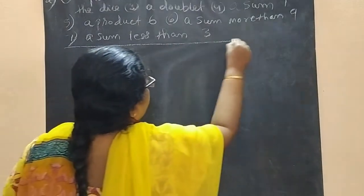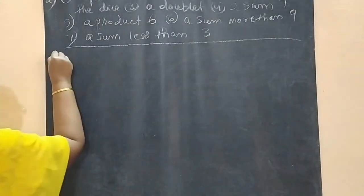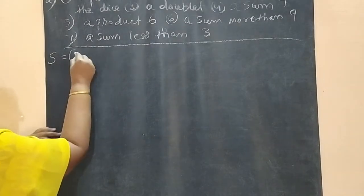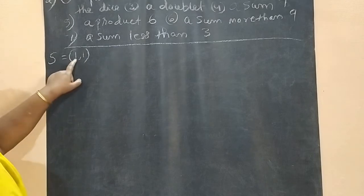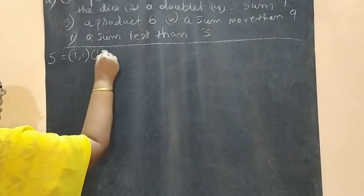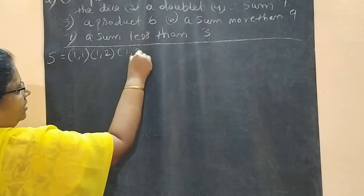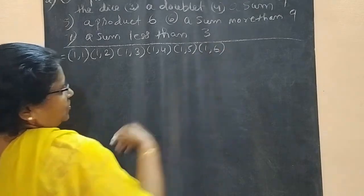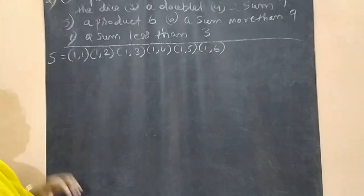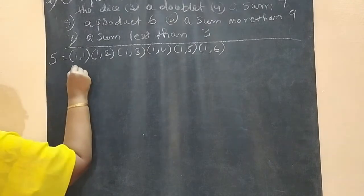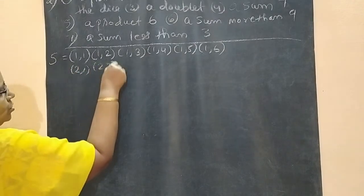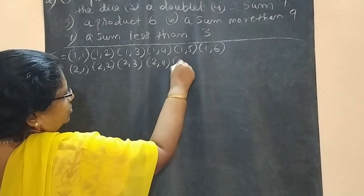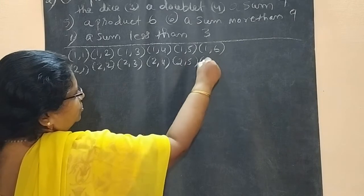So you have to write this in order. The sample space starts with: first die shows one, second shows one — (1,1); (1,2); (1,3); (1,4); (1,5); (1,6). Next row: (2,1); (2,2); (2,3); (2,4); (2,5); (2,6).